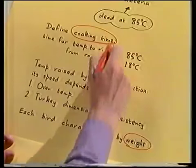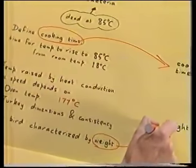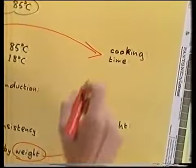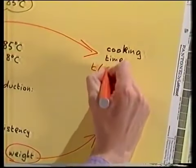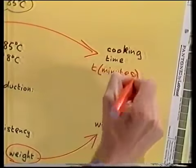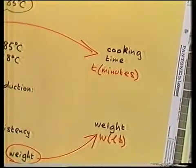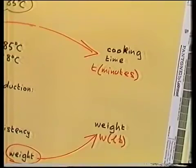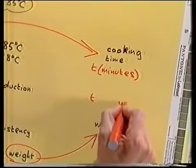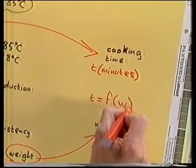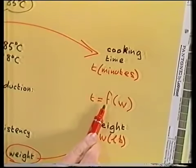Both of these are variables — quantities which can be measured. I'll represent each by a symbol and specify appropriate units: T is the cooking time in minutes, and W is the weight in pounds. The next step is to find how those variables are related. I expect that the cooking time will depend on the weight — in other words, I'll be looking for a function F such that T equals F of W. And there's one thing I know about this function: it ought to be increasing. Bigger birds should need cooking for longer than smaller ones.